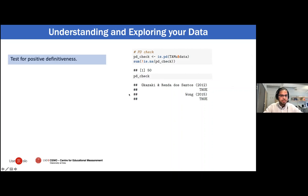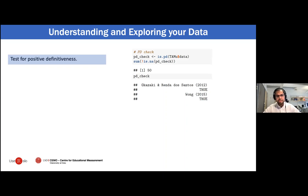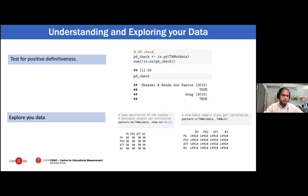The MetaSEM package has the is.pd function. The output will be TRUE, FALSE, or NA. If the output is TRUE, the correlation matrix is positive definite and you can use it in your meta-analysis. If the output is FALSE, the matrix is non-positive definite and you will need to exclude that correlation matrix from the study. You can also check how many studies you have per correlation and the sample sizes per correlation. In this particular study there were 50 studies per correlation and approximately 14,918 observations — a very nice sample size.